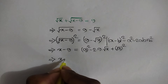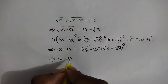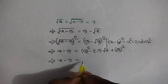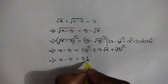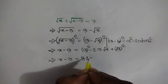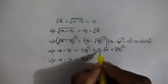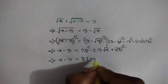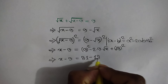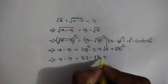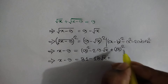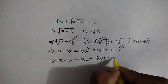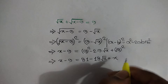So x minus 9 is equal to 9 square is 81 minus 2 times 9 times root x, which is 18 root x, plus root x square. This square root cancels out this square, so it will remain x.